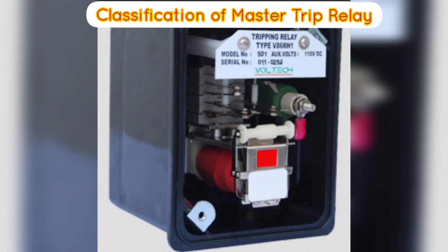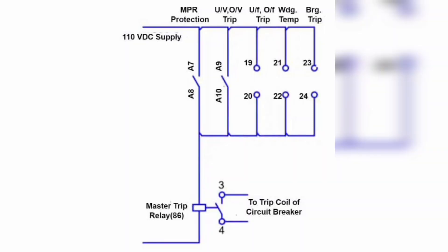Medium Level Master Trip Relay, ANSI Code 86M: When the generator is running in synchronization with the grid supply, and faults such as overcurrent, instantaneous overcurrent, and earth fault occur at the grid supply, then the generator should isolate from the grid supply. This is what the Medium Level Master Trip Relay does. The relay first trips the grid breaker, and if the fault level is still high, it trips the generator breaker. Also, in the case of mechanical failure of generating station equipment — such as oil pressure low, ACW (auxiliary cooling water) flow low, or MCW (main cooling water) pressure low — the Medium Level Master Trip Relay trips the generator breaker and enunciates the alarm, thus isolating the grid supply from the generator supply.